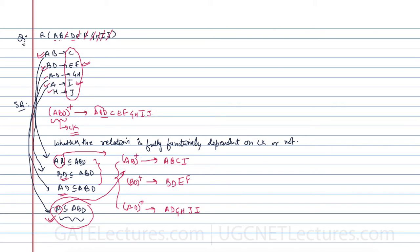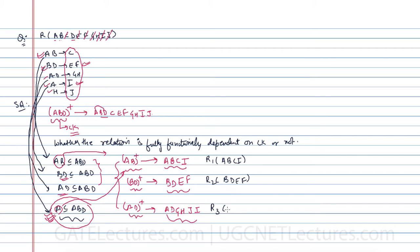With the help of AB we can identify ABCI, with BD we can identify BDEF, and with AD we can identify ADGHI. That means we can break the original relation into three relations: R1 containing attributes ABCI, R2 containing attributes BDEF, and R3 containing attributes A, D, G, H, I, and J.